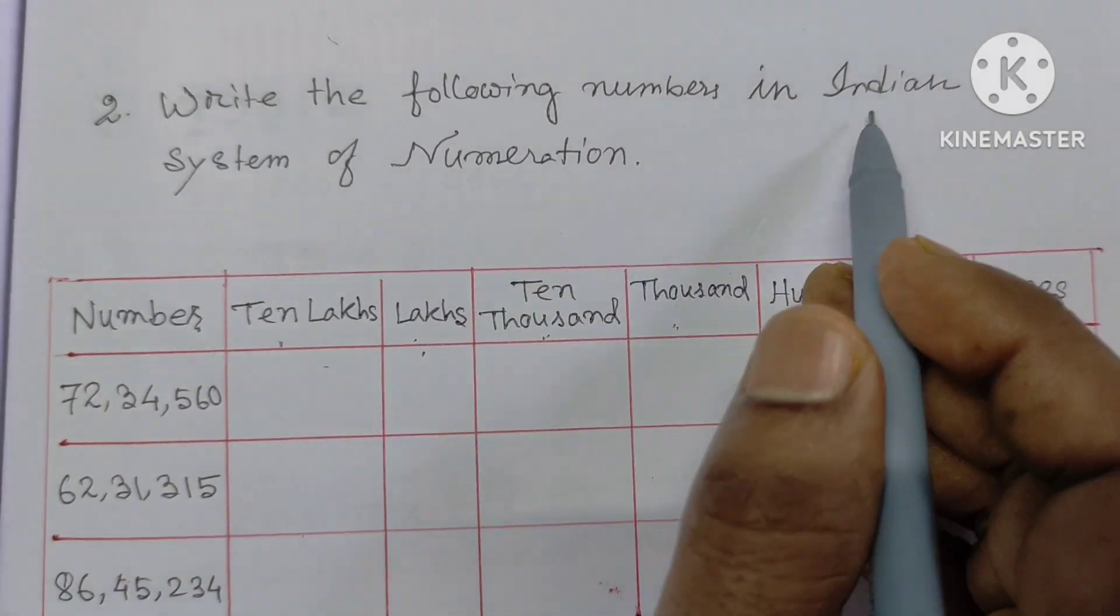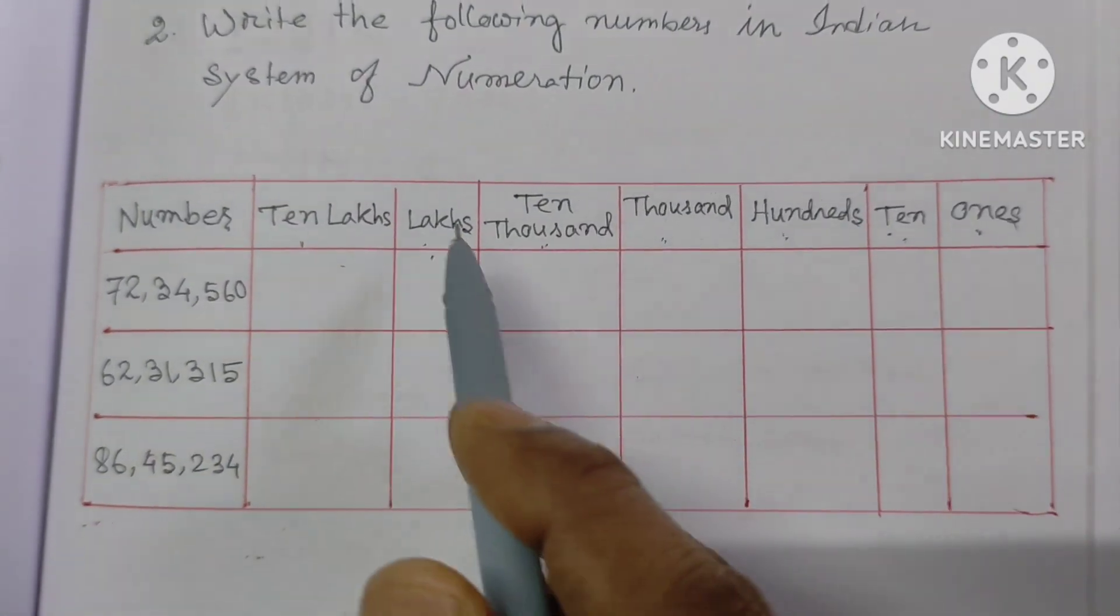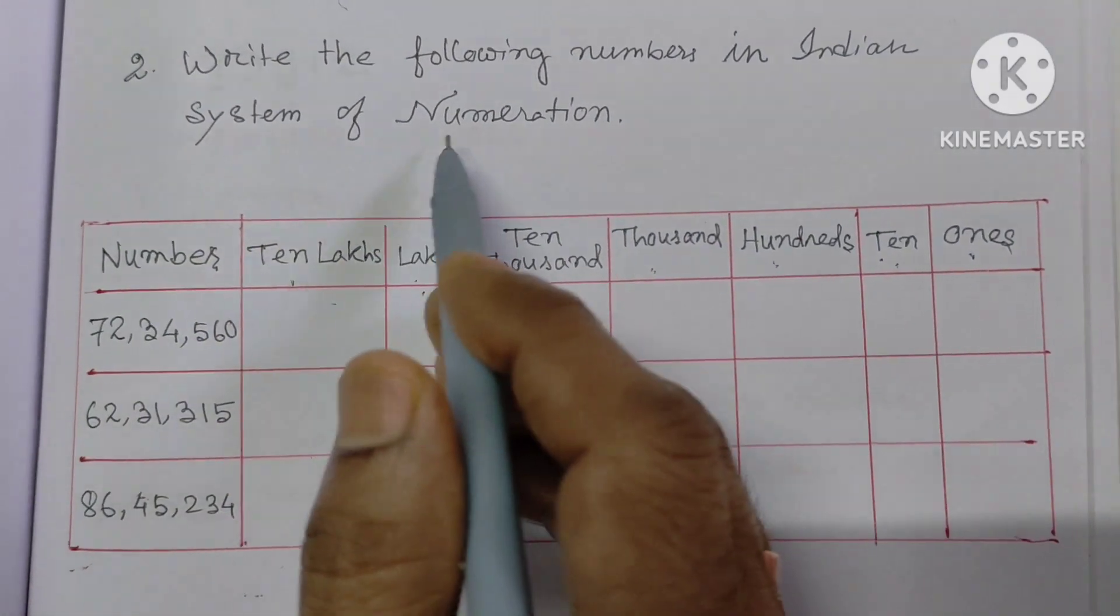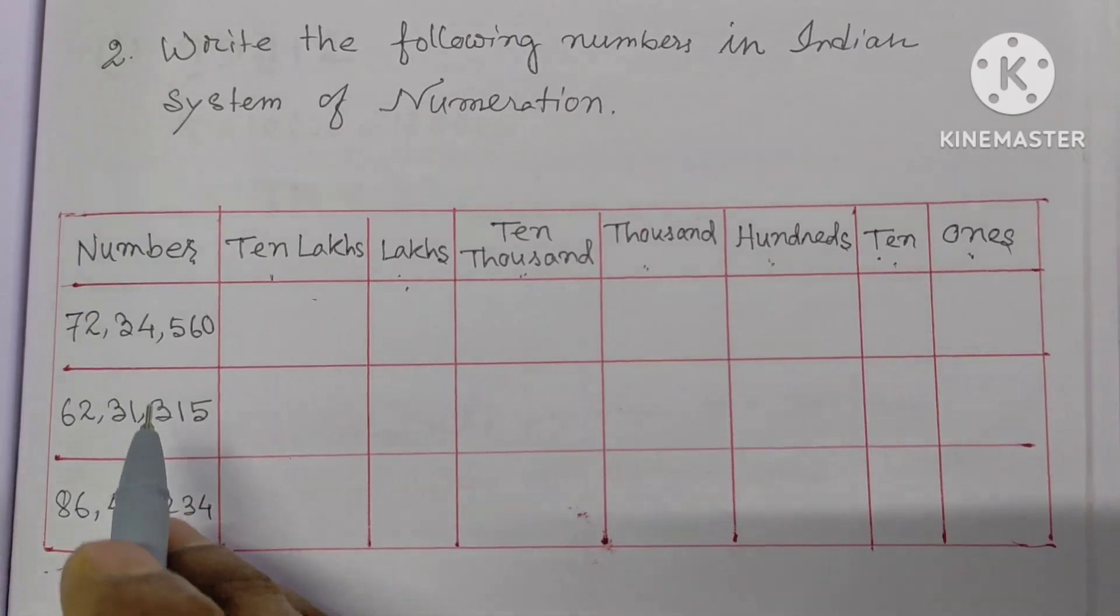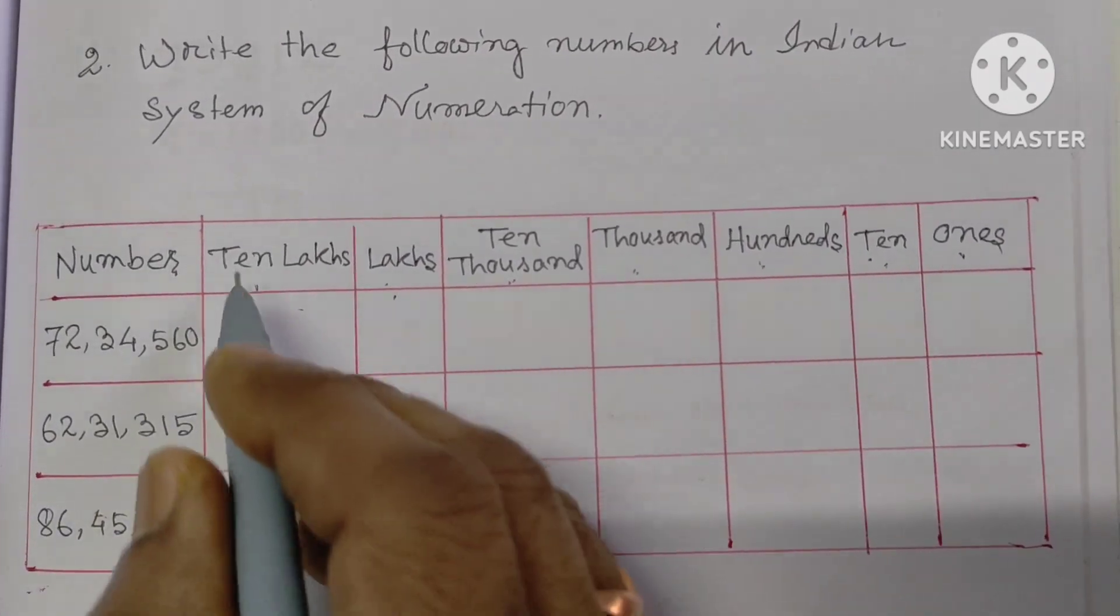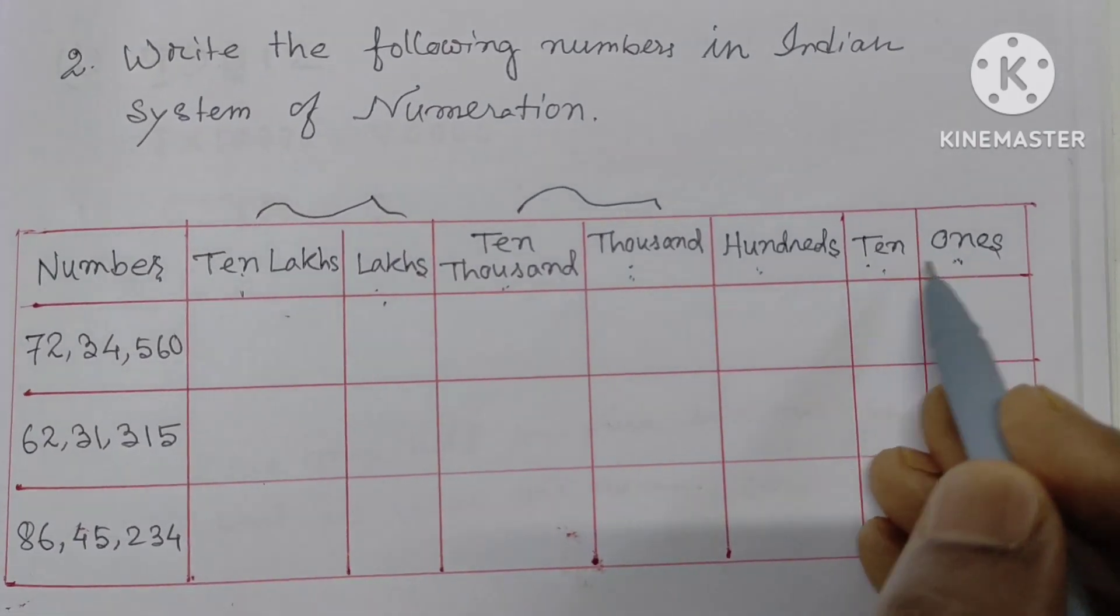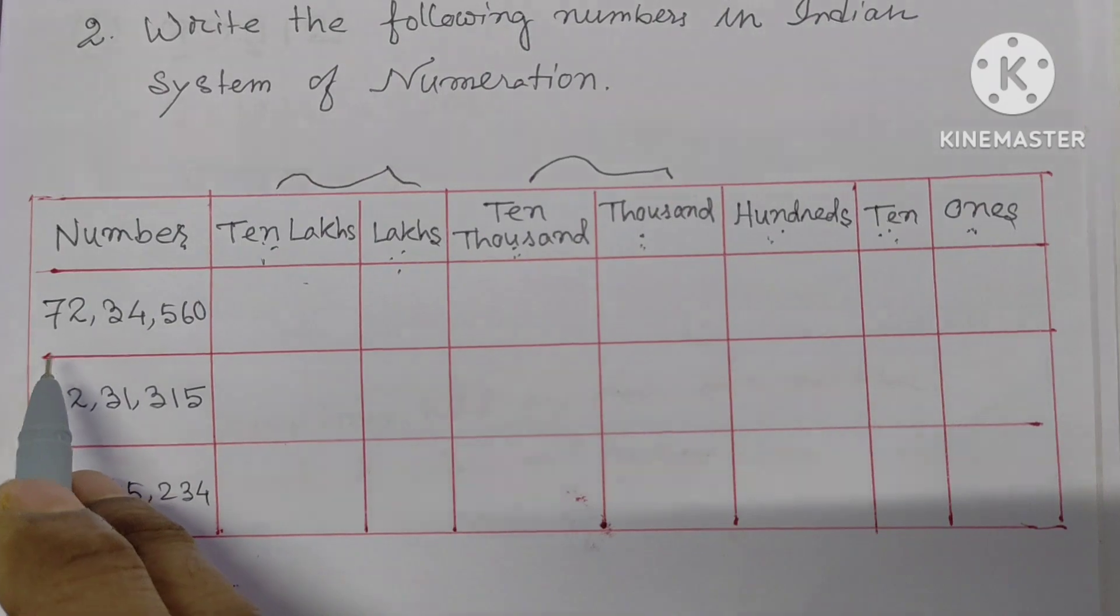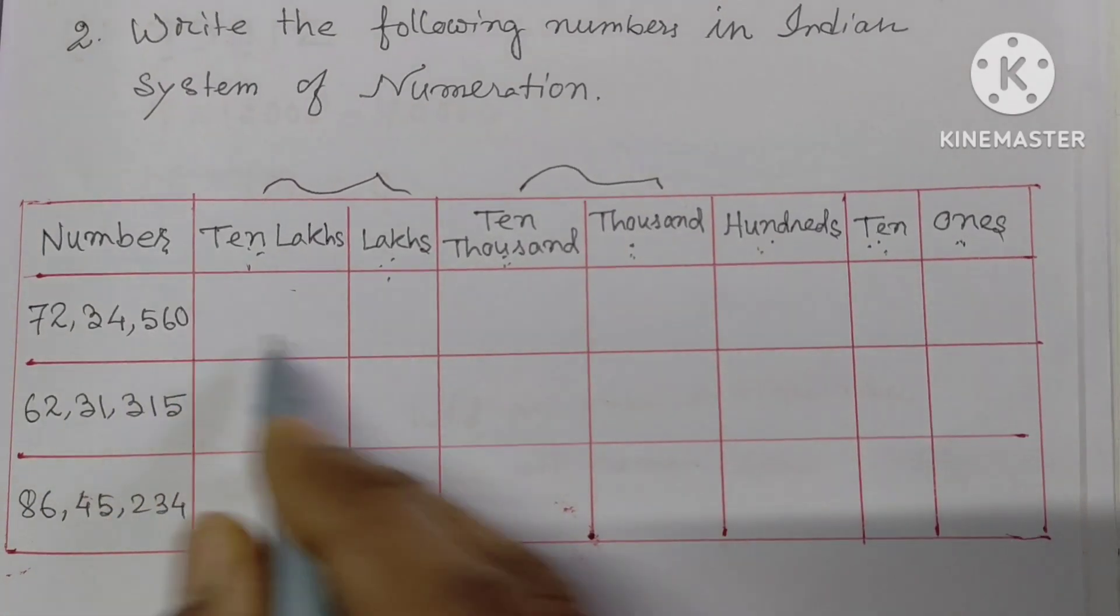Number 2: Write the following numbers in Indian system of numeration. This is the standard format. The table shows ten lakhs, lakhs, ten thousands, thousands, hundreds, tens, and ones. Now the number one in the table. I am right to left, right to left, right to left.